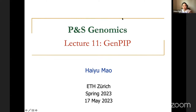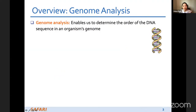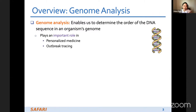Today I'm going to introduce our project called GenPIP. GenPIP is an in-memory examination of genome analysis via tight integration of the nanopore genome analysis steps. I will first give an overview of the whole project, then go to the details. Genome analysis enables us to determine the order of the DNA sequence in an organism's genome. It plays an important role in personalized medicine, outbreak tracing, understanding evolution, and so on.